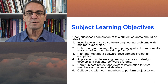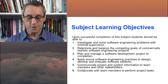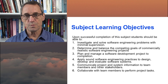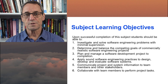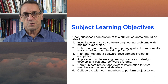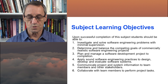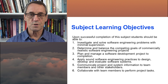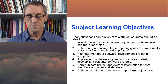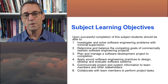The subject learning objectives — here are the things you should be capable of doing by the time you've finished. On successful completion of this subject, students should be able to investigate and solve software engineering problems with minimal supervision; determine and balance competing goals of commercially realistic software engineering projects; plan and manage a software development project to completion; apply sound software engineering practices to design, develop, and evaluate software systems; communicate project and system information to team members and other stakeholders; and collaborate with team members to perform project tasks.